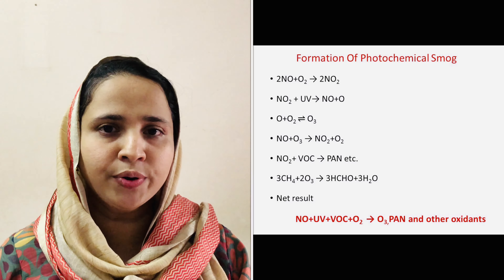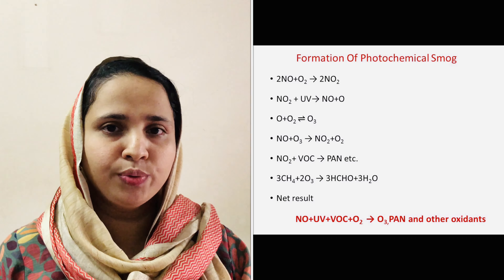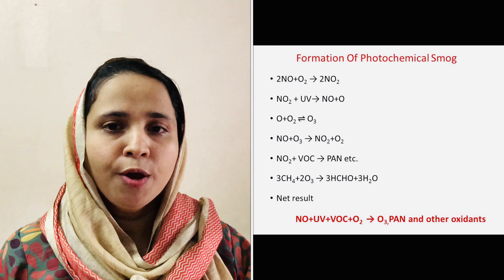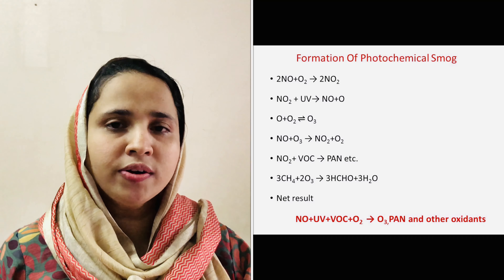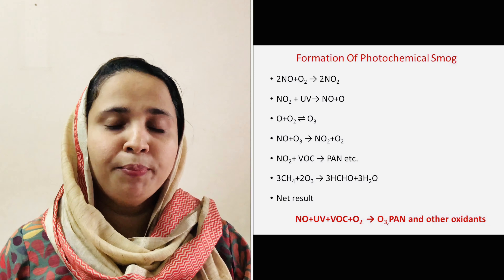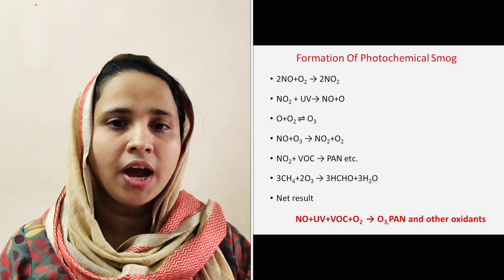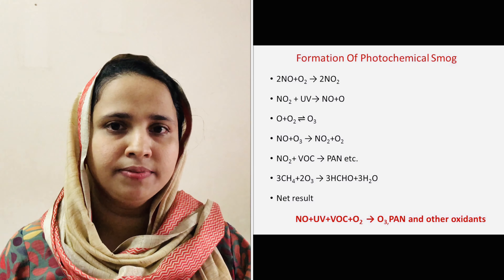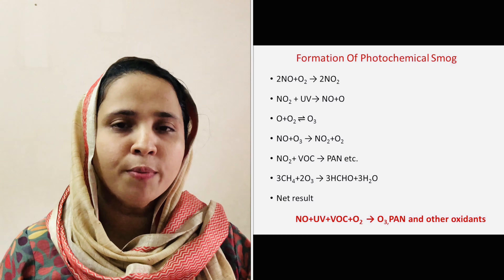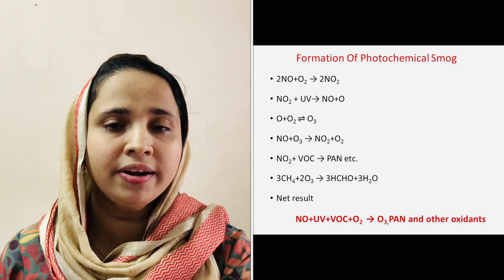Ozone oxidizes NO formed in the previous reaction to regenerate brown NO2, which is the major contributor to the brown haze. Both NO2 and ozone are strong oxidizing agents which can react with unburned hydrocarbons in the polluted air to produce chemicals such as formaldehyde, acrolein, and peroxyacetyl nitrate, along with various other volatile compounds like aldehydes and ketones. These products stay in the atmosphere and produce smog.